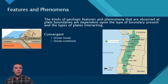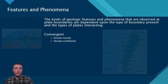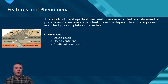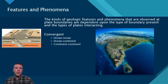Where two continental plates converge, because of the relatively equal densities of those plates, the degree to which one subducts under another is much less apparent. The result is the edges of those continental plates both lifting up, forming a non-volcanic mountain range. The formation of the Himalayas, where the Indian subcontinent and the Eurasian plate meet, is a superb example of such a boundary.